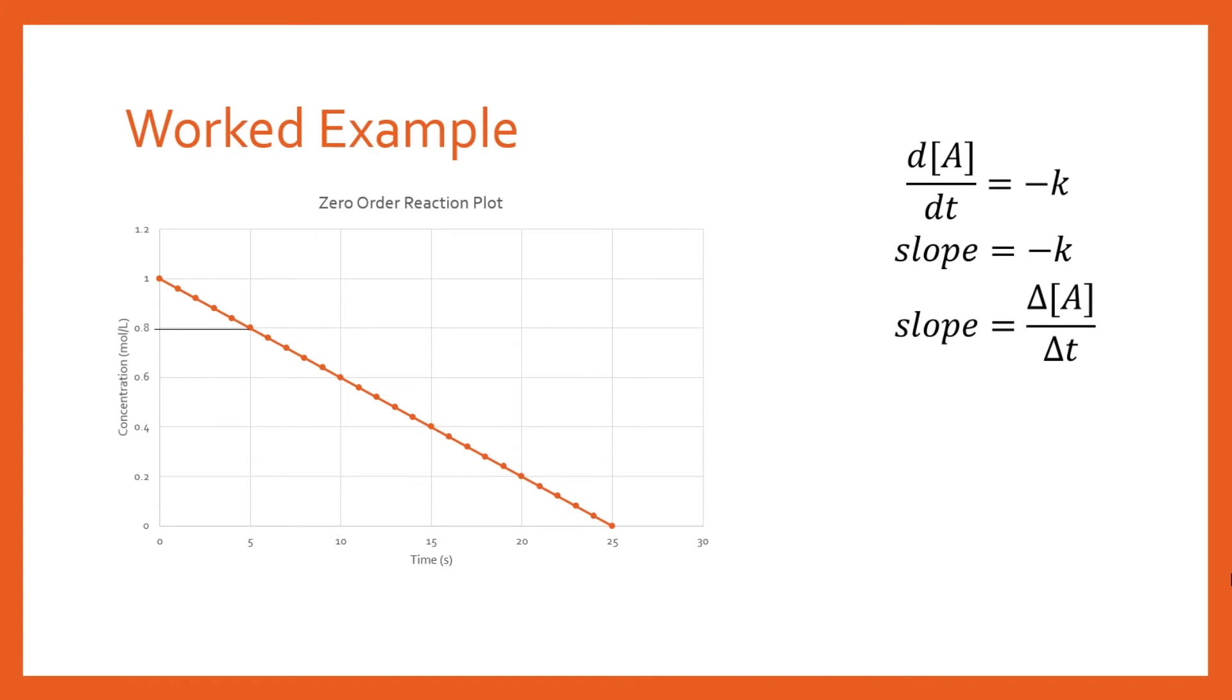We can choose two points. We'll read across from 0.8 and down to five seconds—a nice easy point. Choose another point at 0.6 and read down to 10 seconds. Because this is a straight line, it doesn't matter which points you choose; any points will give the same answer.